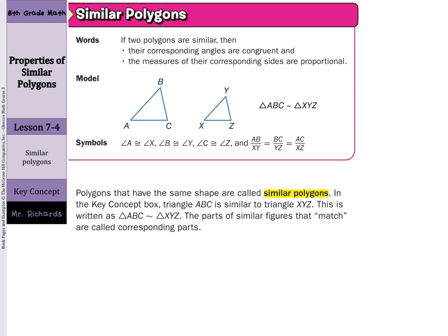Our key concept today is similar polygons. If two polygons are similar, then the corresponding angles are congruent, and the measures of their corresponding sides are proportional. What you can notice here is triangle ABC, our squiggly line is similar to triangle XYZ. So that means angle A is congruent to angle X, angle B is congruent to angle Y, angle C is congruent to angle Z.